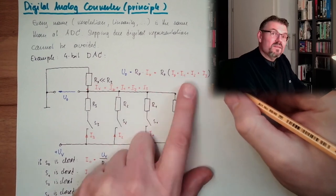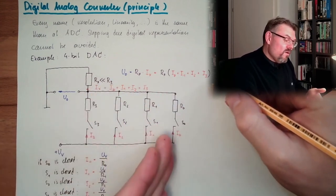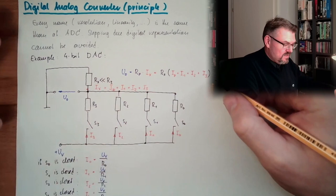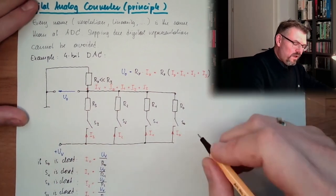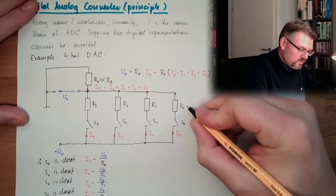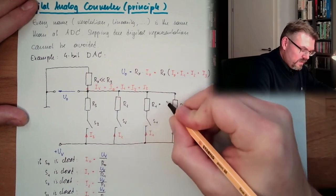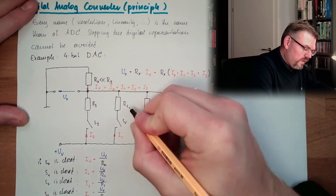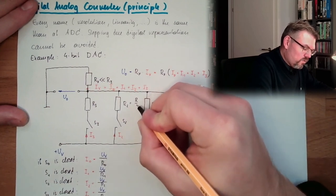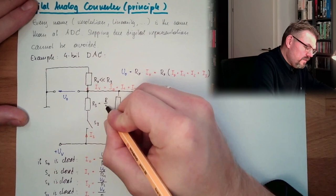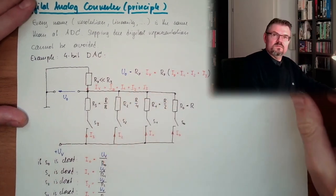And all those I's are there or not, depending on the switching state of the S's. And now I make the following trick. This I say is a resistor R. And this I say is R half. And this I say is R quarter. And this I say is divided by 8.